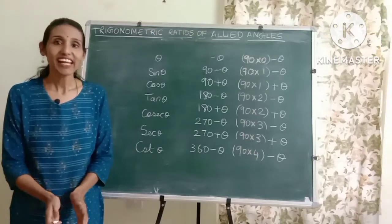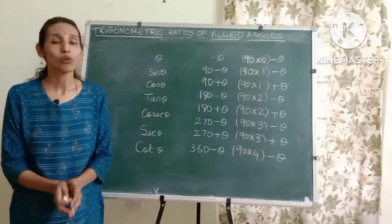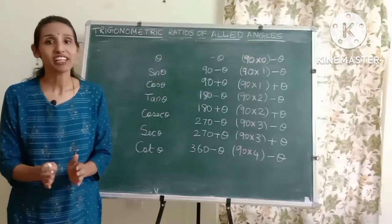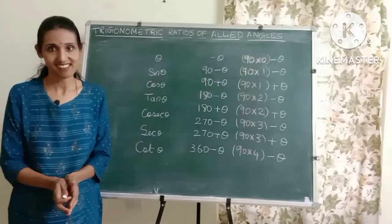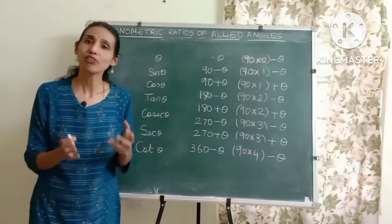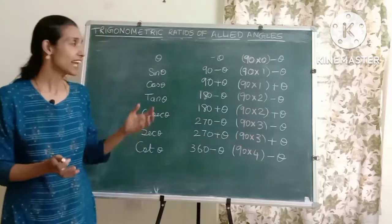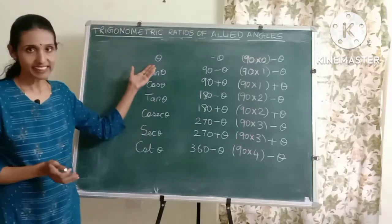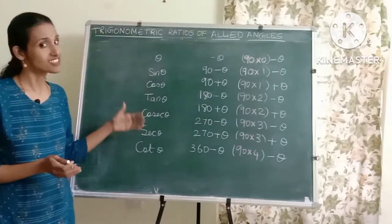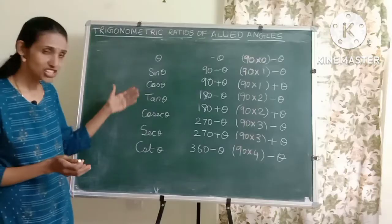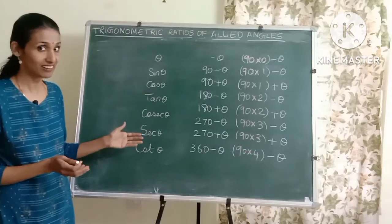Hello everyone! Today, let's learn what are the trigonometric ratios of allied angles. For any given angle theta, we know what are the six trigonometric ratios of theta.